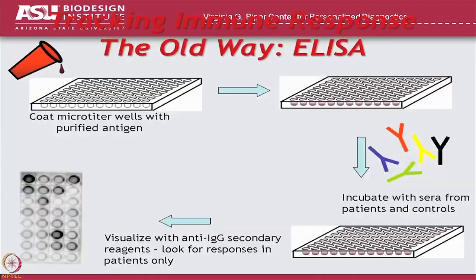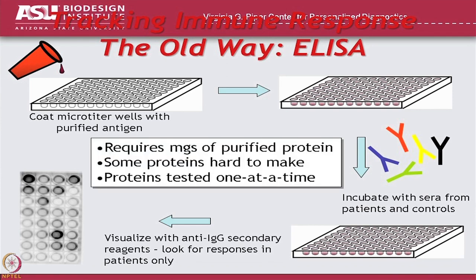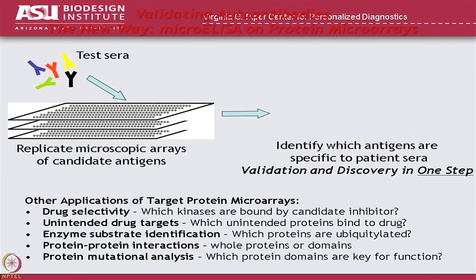We talked about immune responses — the classic immune response by ELISA, where you coat the 96-well dish with your protein, add serum to the wells, and here's a patient who had a strong response and here's a patient who had no response. Of course, if you do ELISAs you're doing one protein at a time, it typically requires a lot of protein, and some proteins are very hard to make. So what we'd like to do is take a chip that displays thousands of proteins, probe a chip with serum, and various spots on the chip light up.